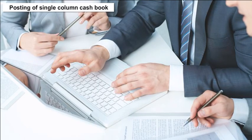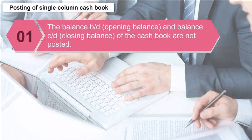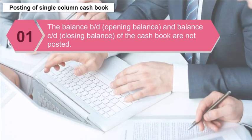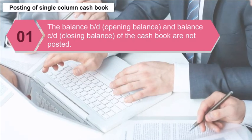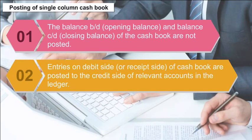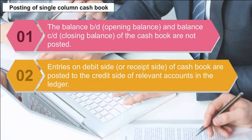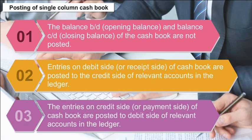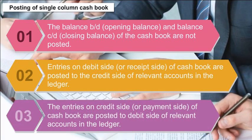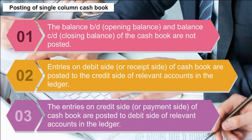Posting of Single Column Cash Book: The balance brought down (opening balance) and balance carried down (closing balance) of the cash book are not posted. The entries on the debit side or receipt side of the cash book are posted to the credit side of relevant accounts in the ledger. The entries on the credit side or payment side of the cash book are posted to the debit side of relevant accounts in the ledger.